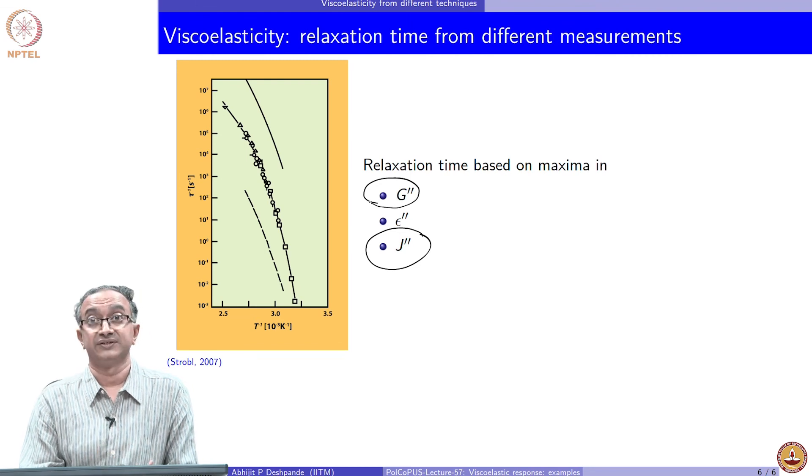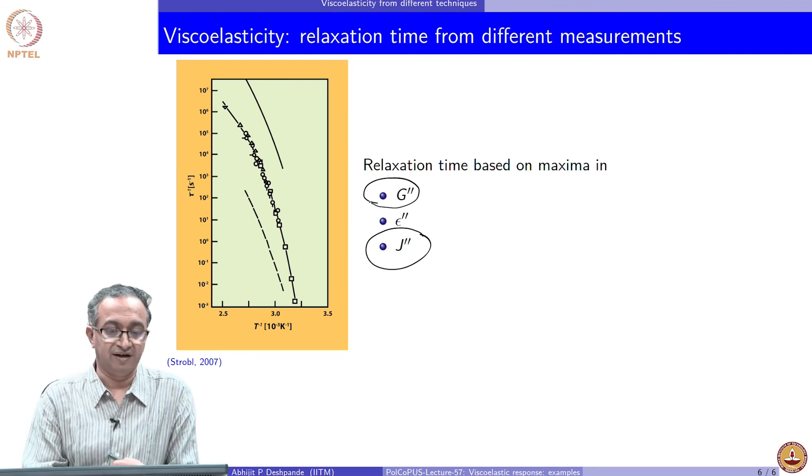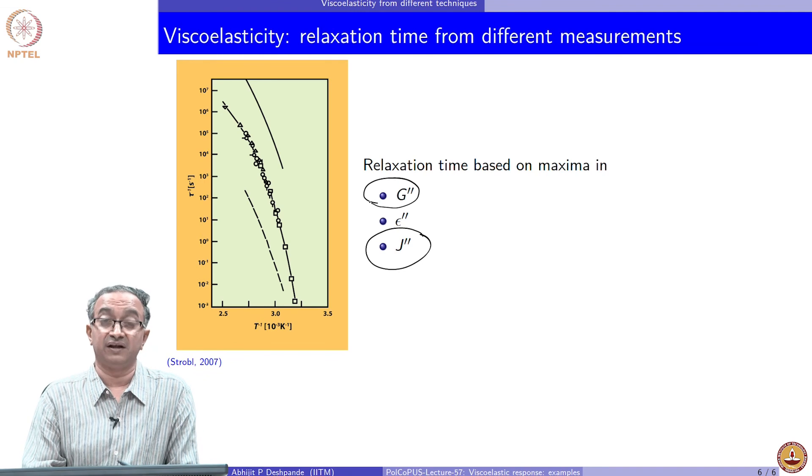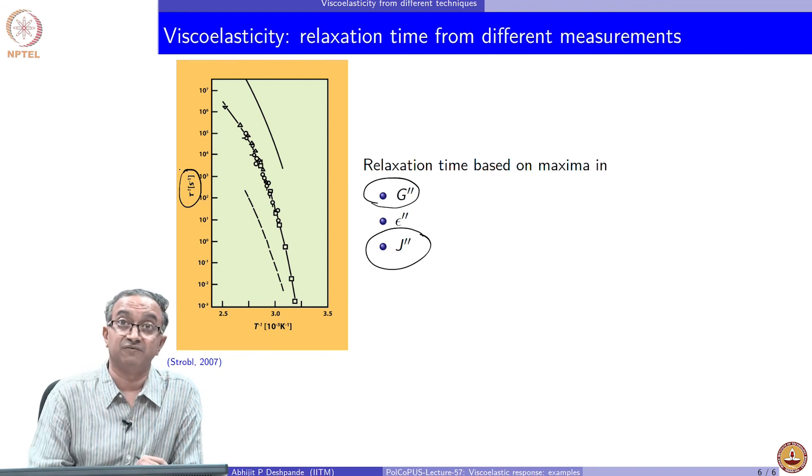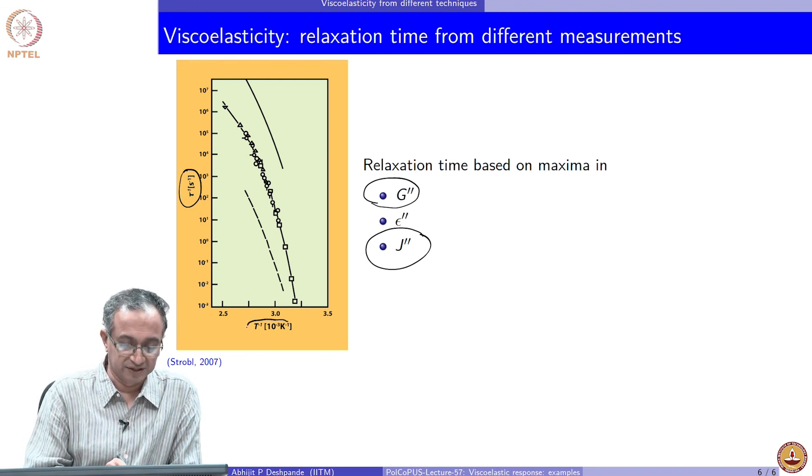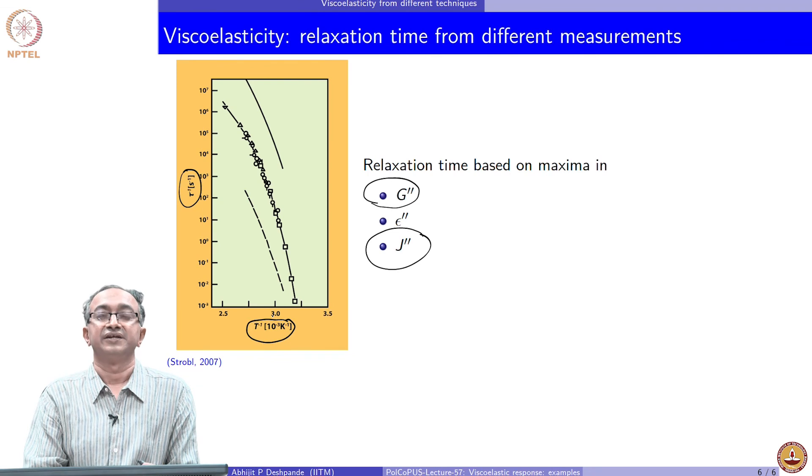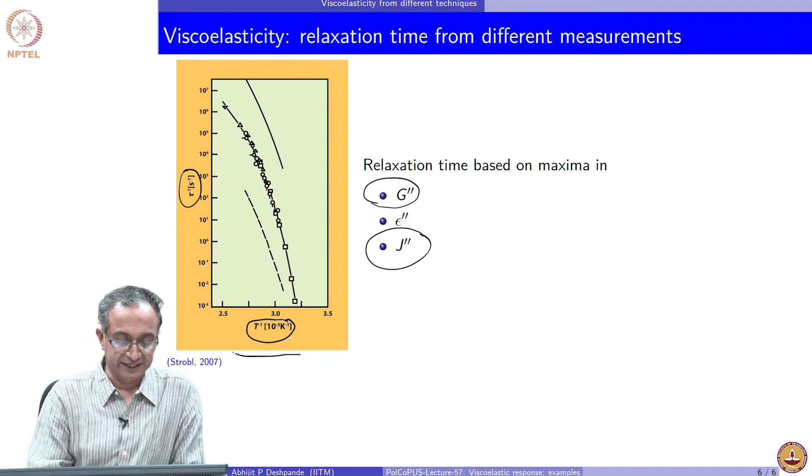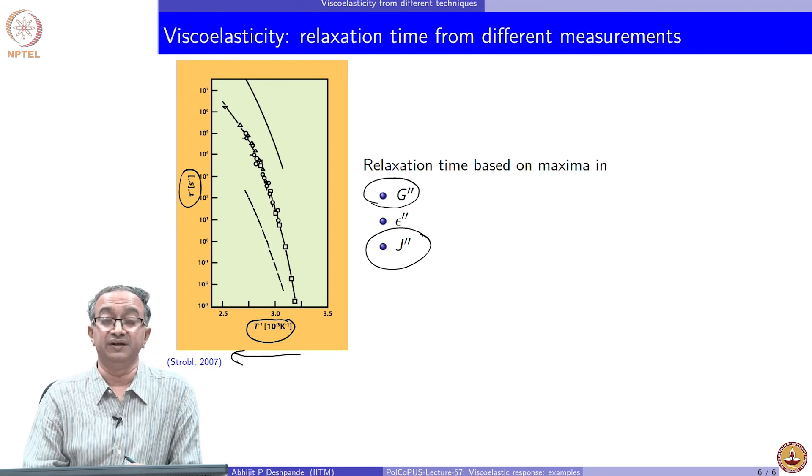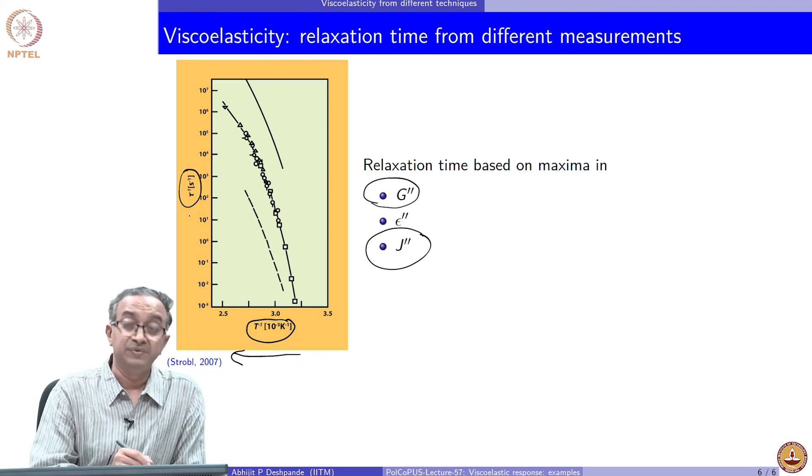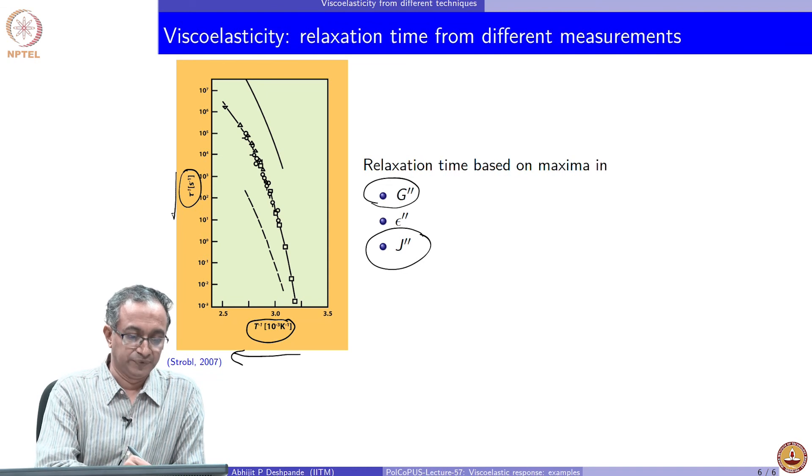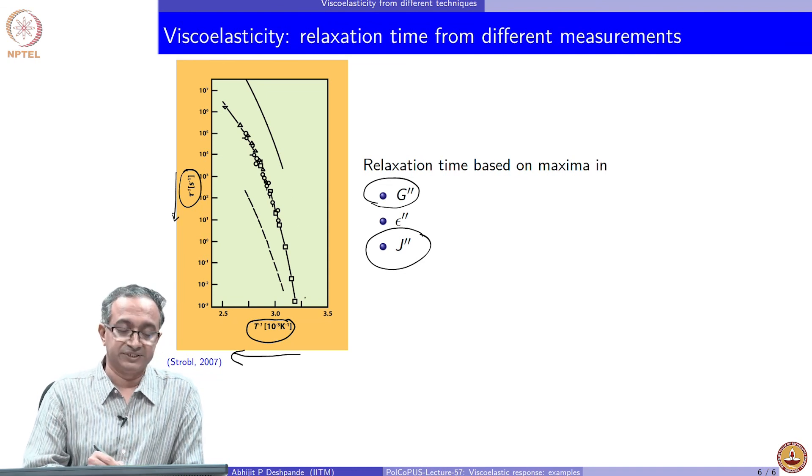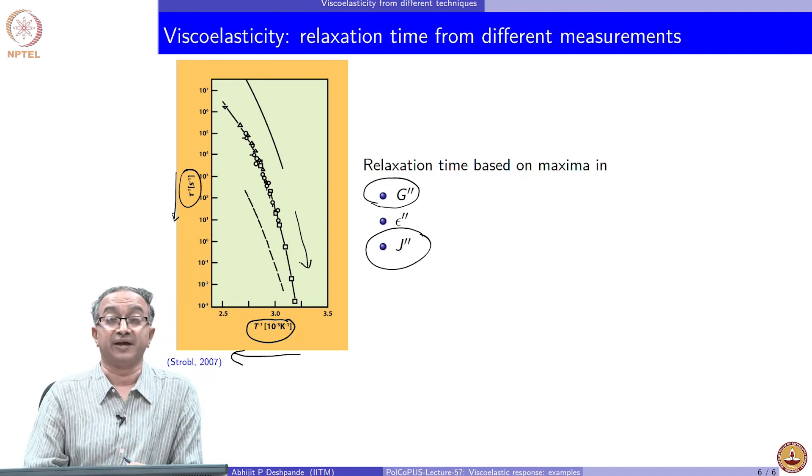And the same exercise can be carried out by doing sinusoidal variation and calculating compliance or sinusoidal variation in calculating the modulus. And in this graph for same polyvinyl alcohol, the data is summarized where the relaxation time and in this case, it is the inverse of relaxation time is plotted with inverse of temperature.